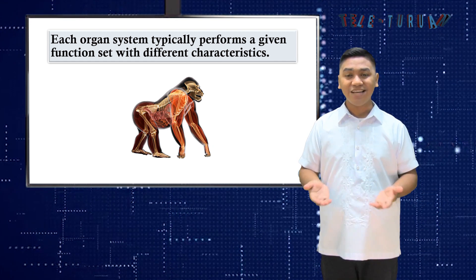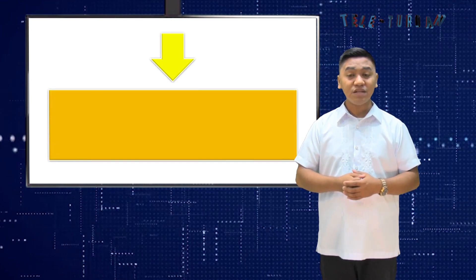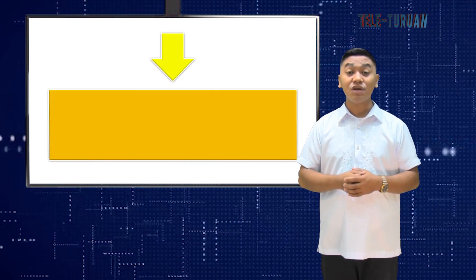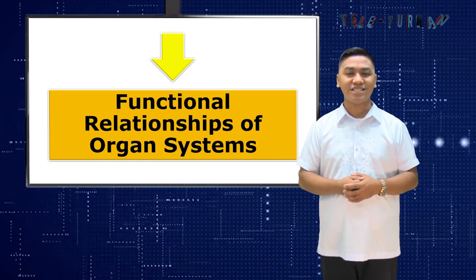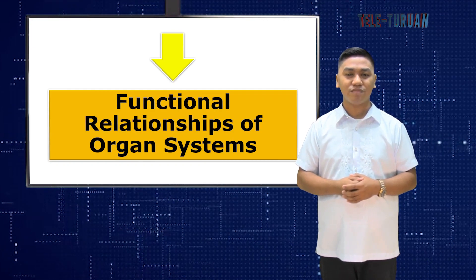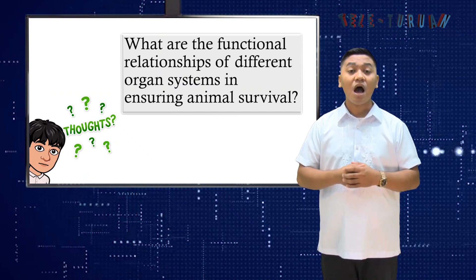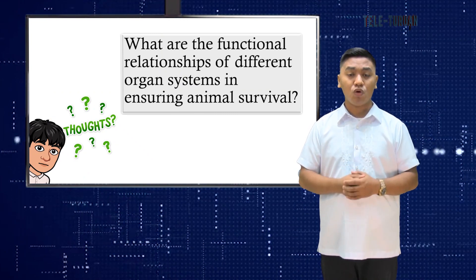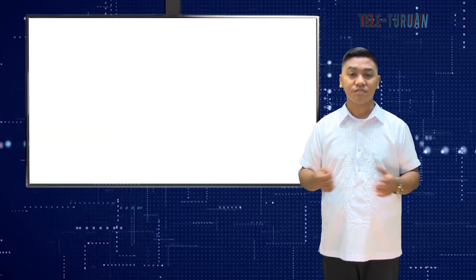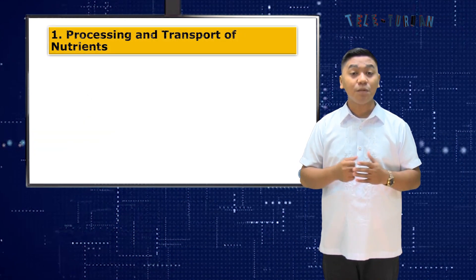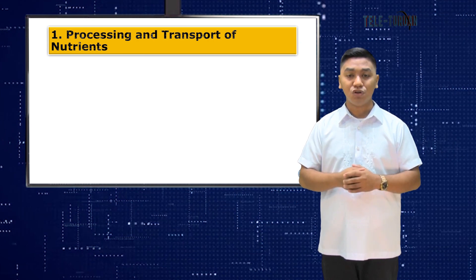With that, let us proceed to our lesson proper. Our lesson for today is all about functional relationships of organ systems. But what are the functional relationships of different organ systems in ensuring animal survival? First is the processing and transport of nutrients.